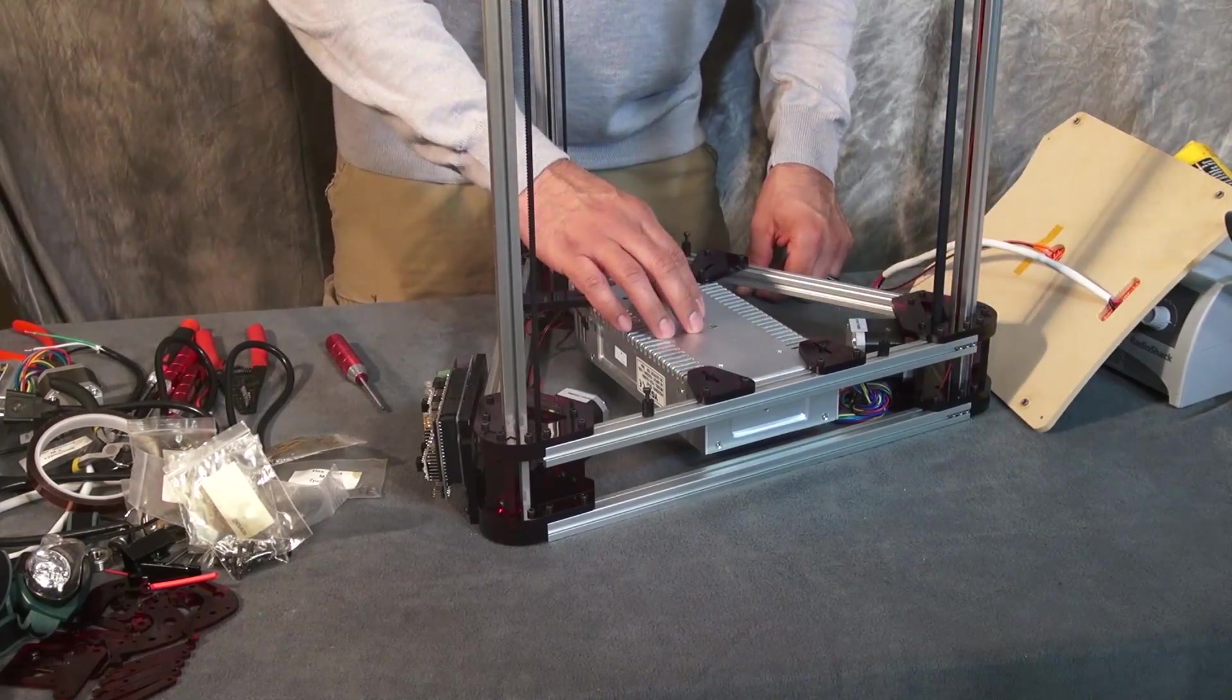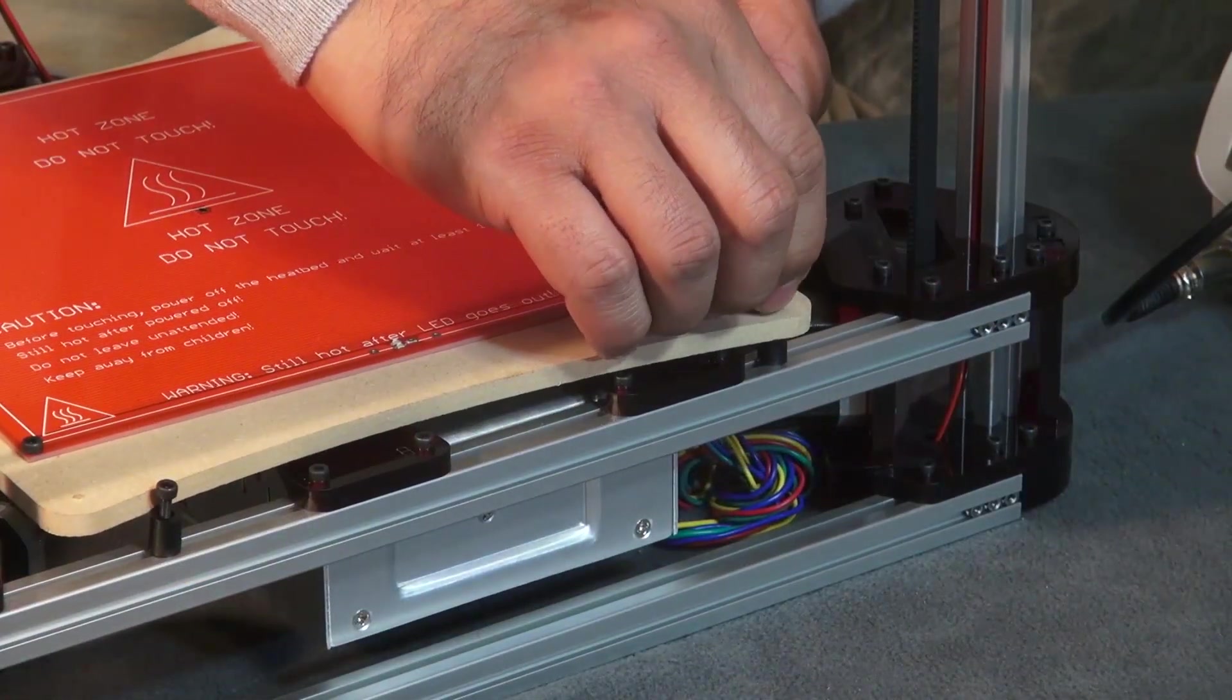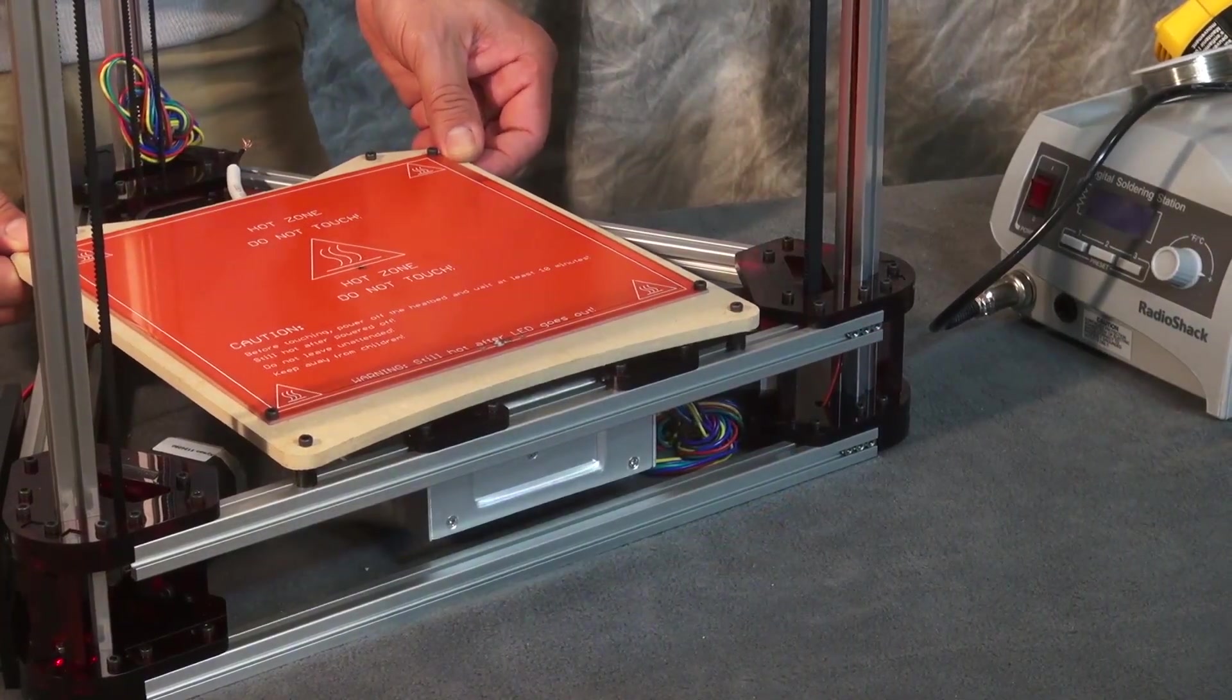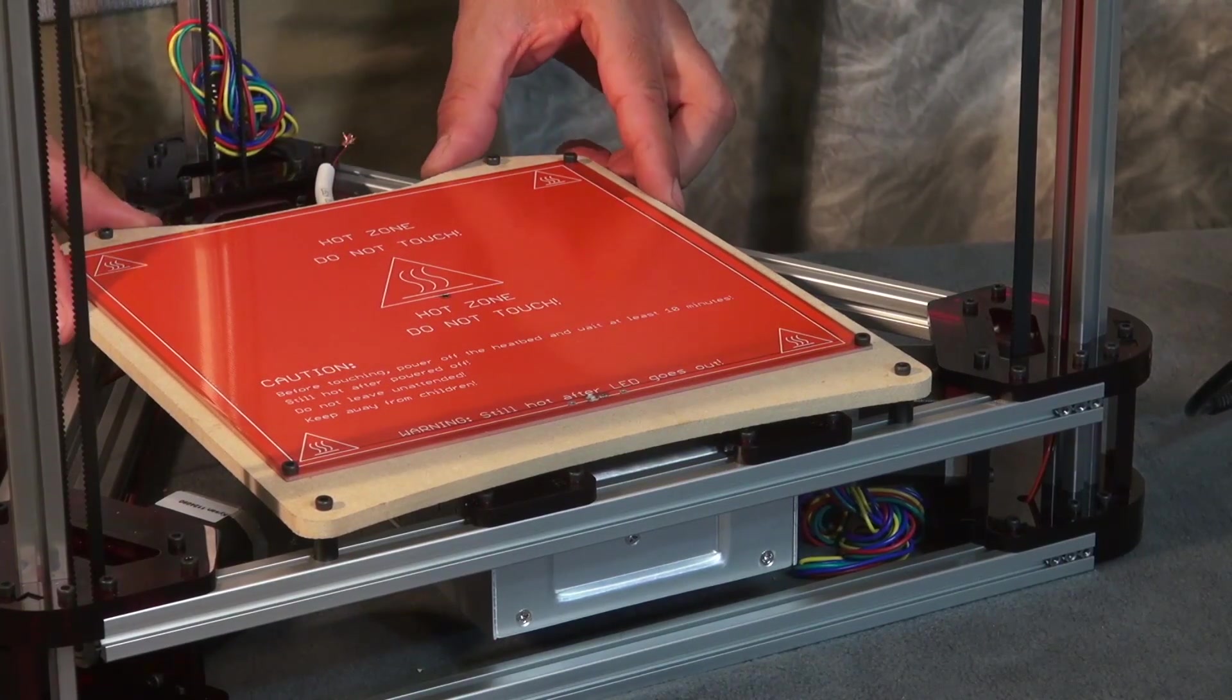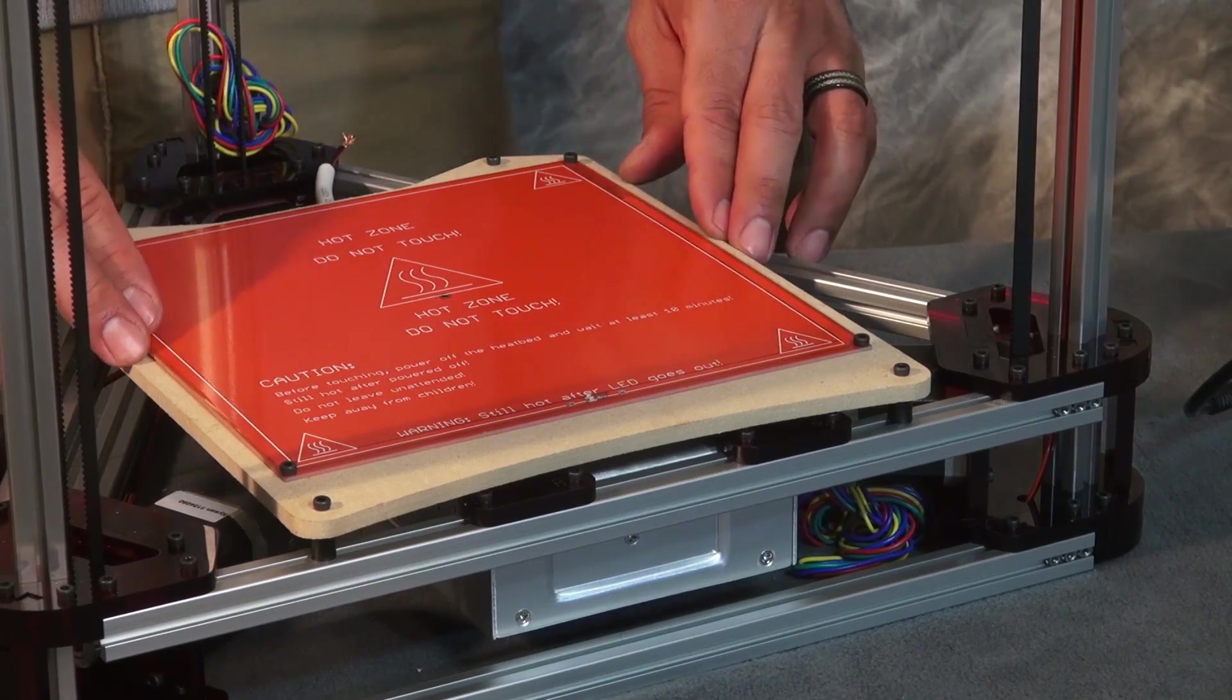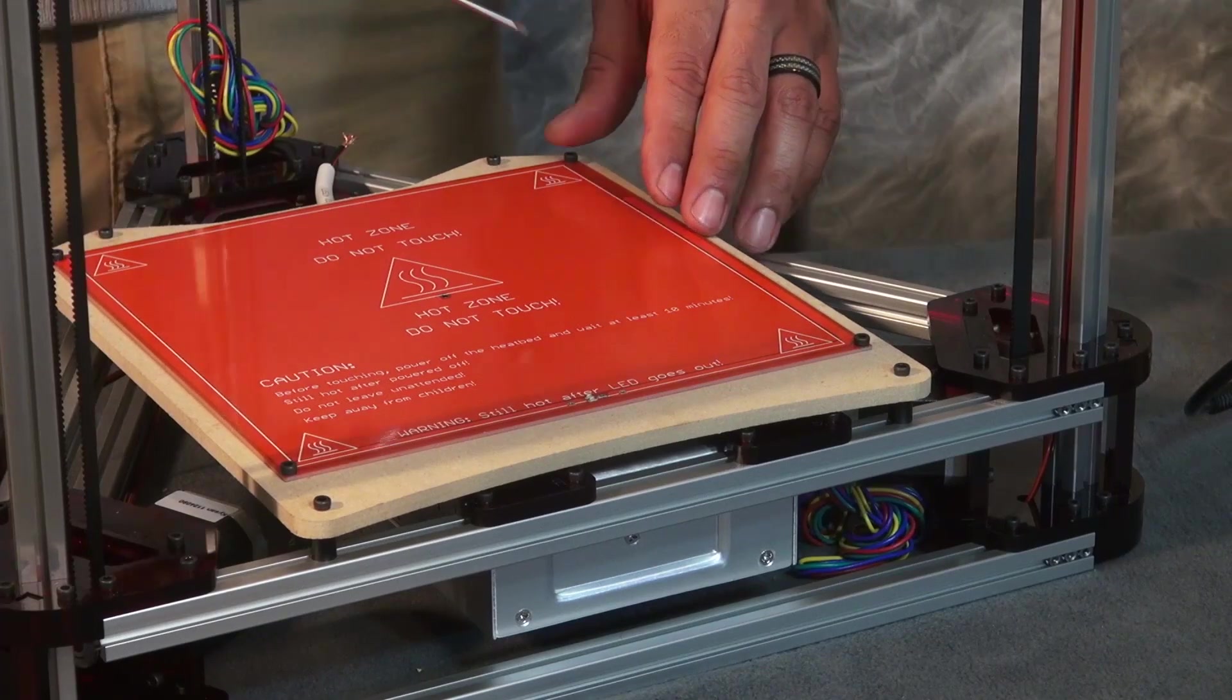You want to line up and bolt down one at a time. Keep it loose enough where you can slide it around so you can connect the other ends. Once you have your four bolts lightly screwed in, you want to make sure your board is as centered as possible. Once you feel confident that the board is centered, tighten the bolts down firmly.